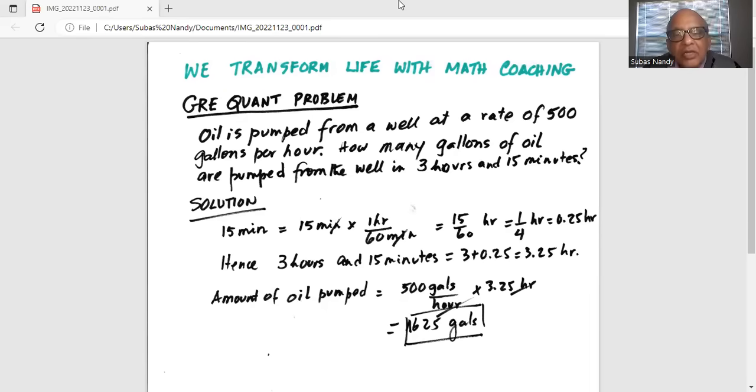So minute and minute cancels and we are left with 15 over 60 hour, which is 1 out of 4 hour, which is 0.25 hour. Hence 3 hours and 15 minutes is 3.25 hour.